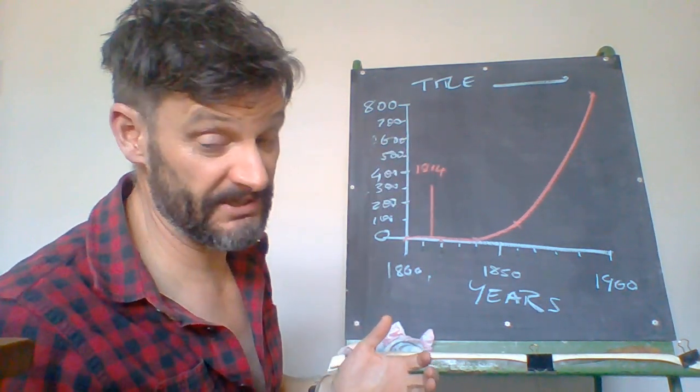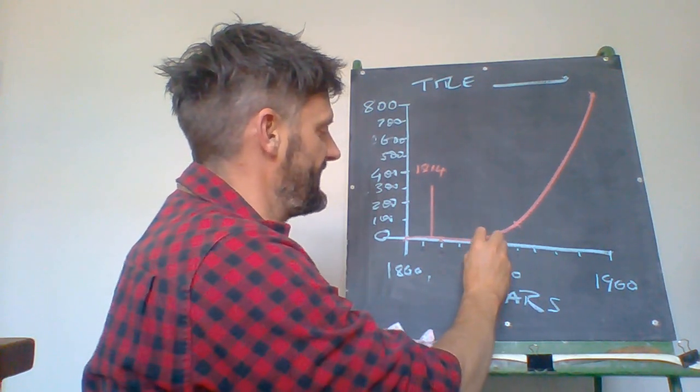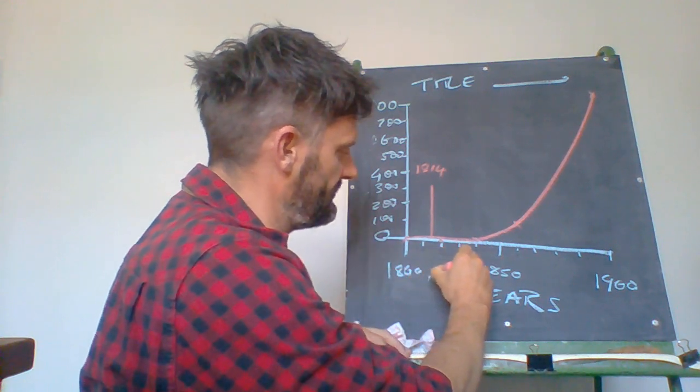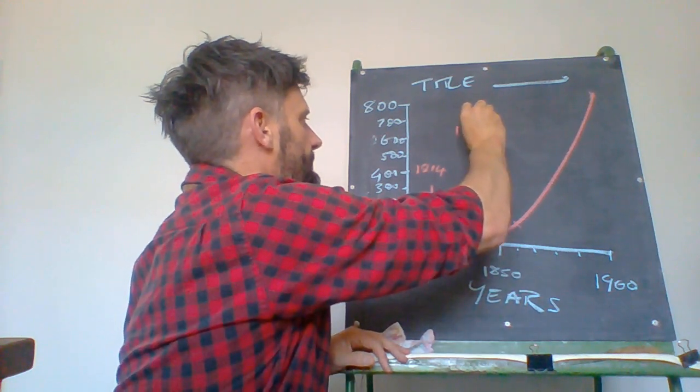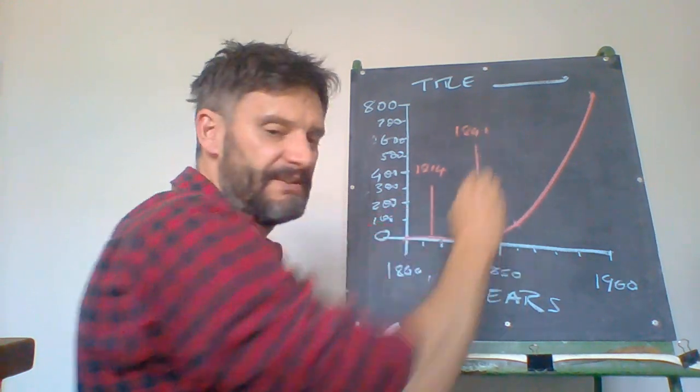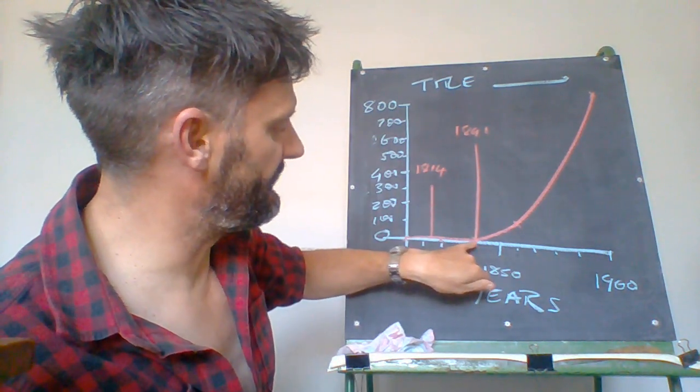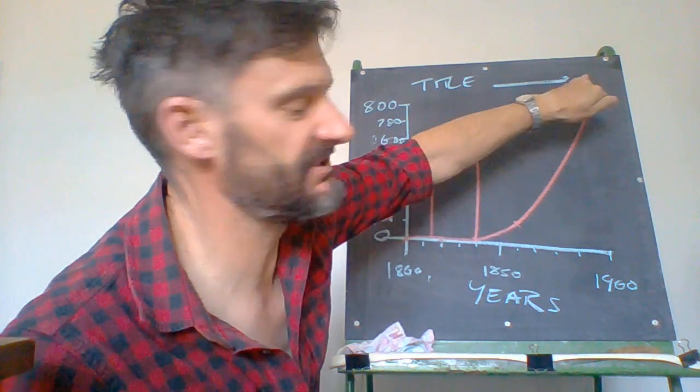The next one is something I mentioned earlier on and that was the signing of the Treaty of Waitangi and that occurred in 1840. 1810, 1810, 1820, 1830, 1840 there and I'll go 1840 and I'll write down the signing of the Treaty of Waitangi. Now I can see that from the signing of the Treaty of Waitangi onwards things are really started to increase.